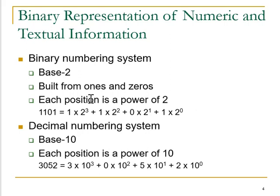Each position is represented as a power of 2. Here is one example showing how the binary numbering system can be represented as a power of 2. The first one is the MSB bit and the last one is the LSB bit. If we begin from the LSB bit we can see that this is the 0th digit, first digit, second digit, and the third digit.